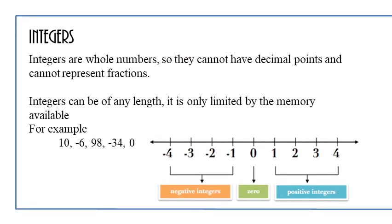Now, let's look at each data type one by one. We have the first one called integers. And of course, this will take you back to math again. Integers are whole numbers. So they cannot have decimal points and cannot represent fractions. Integers can be of any length. It is only limited by the memory that is available on your computer. For example, you have the number 10, negative 6, 98, negative 34, and 0. These are all examples of integers because they are whole numbers and do not have any decimal places or fractions.